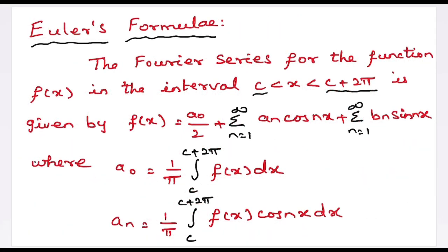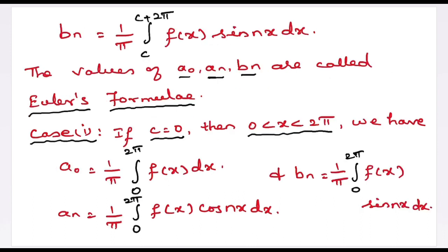Next, Euler's formula — used to find the values of a₀, aₙ, and bₙ. The Fourier series for the function f(x) in the interval c to c+2π is given by f(x) = a₀/2 + Σ(n=1 to ∞) aₙ cos(nx) + Σ(n=1 to ∞) bₙ sin(nx). To find the coefficients, we integrate both sides: a₀ = (1/π)∫[c to c+2π] f(x) dx; aₙ = (1/π)∫[c to c+2π] f(x)cos(nx) dx; bₙ = (1/π)∫[c to c+2π] f(x)sin(nx) dx. These values of a₀, aₙ, and bₙ are called Euler's formula.